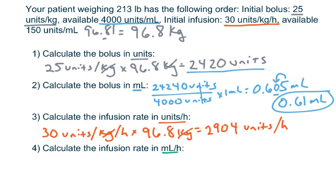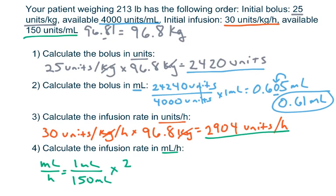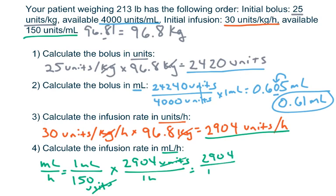Now calculate the infusion rate in milliliters per hour to program the pump. Using dimensional analysis: 1 mL per 150 units, times 2,904 units per hour. Units cancel. 2,904 divided by 150 gives 19.36. Rounding to a whole number for flow rate gives 19 milliliters per hour. That's how you set the pump.